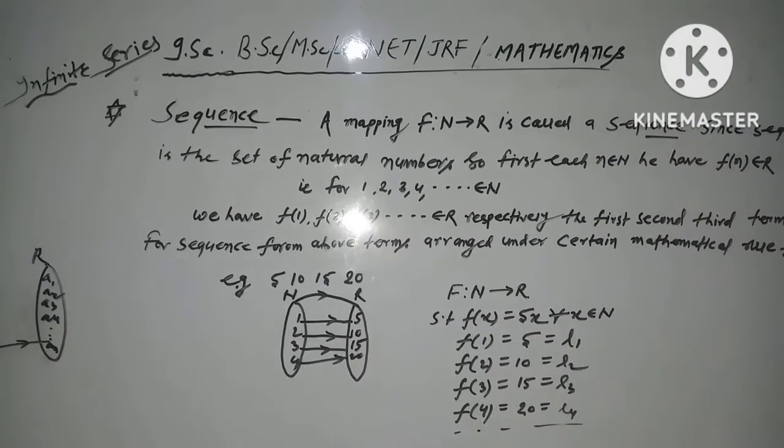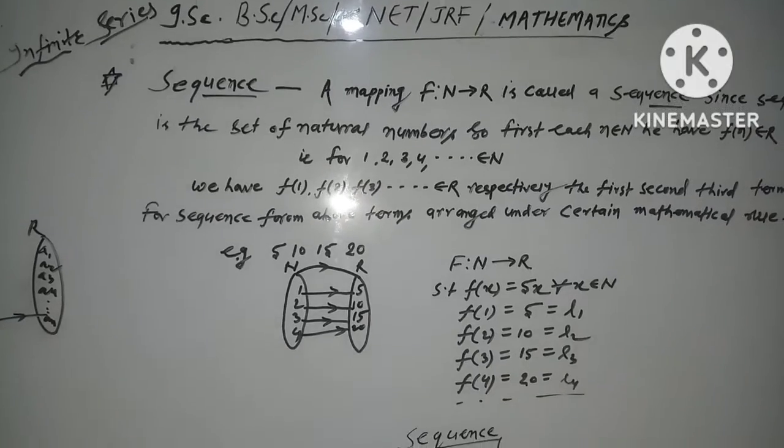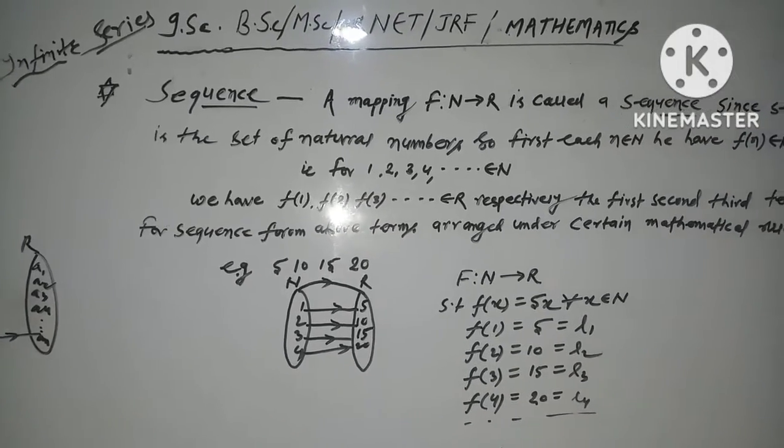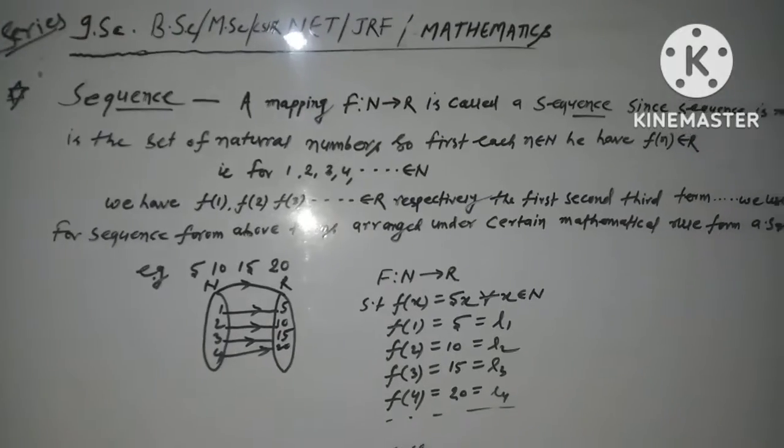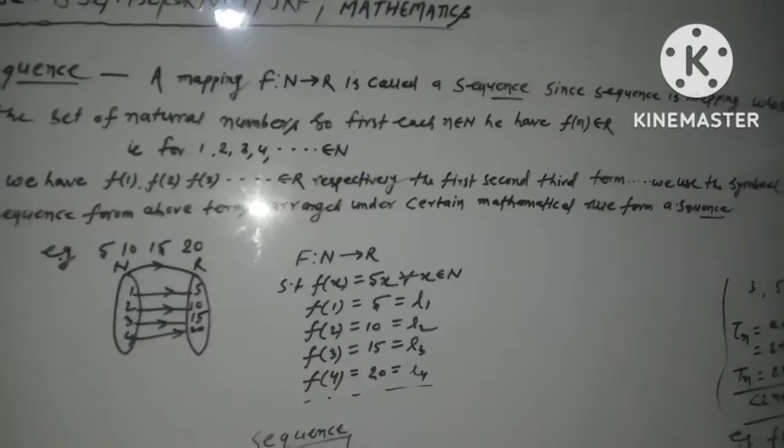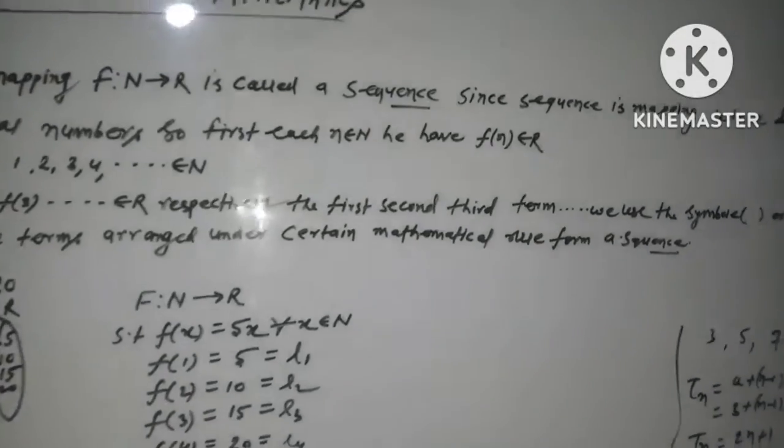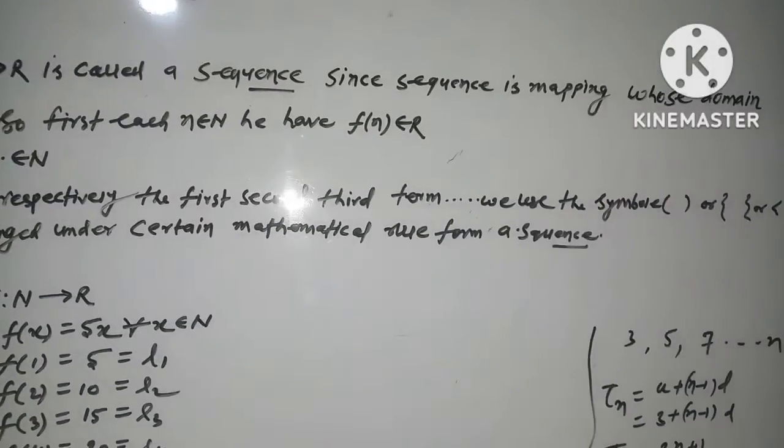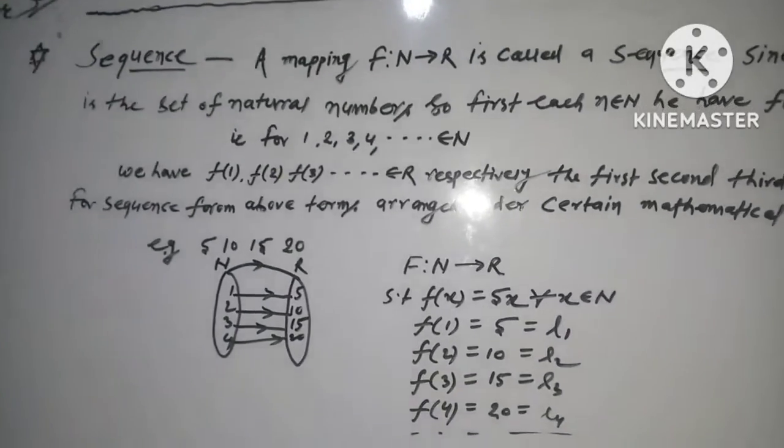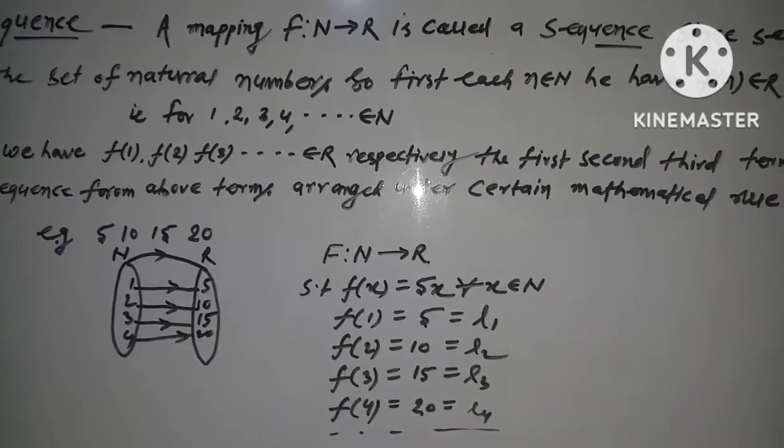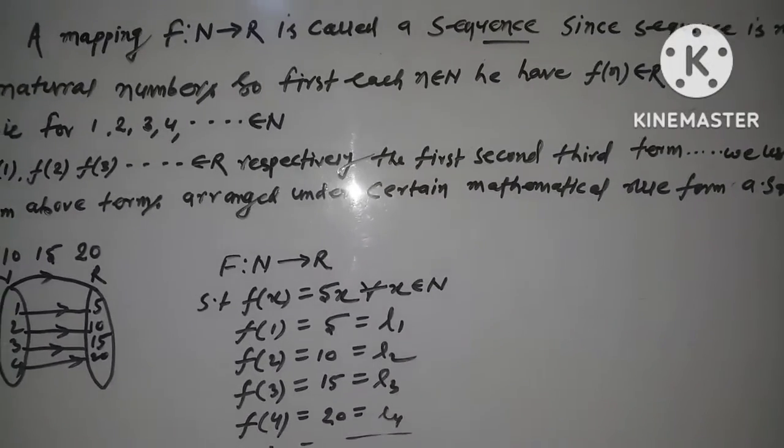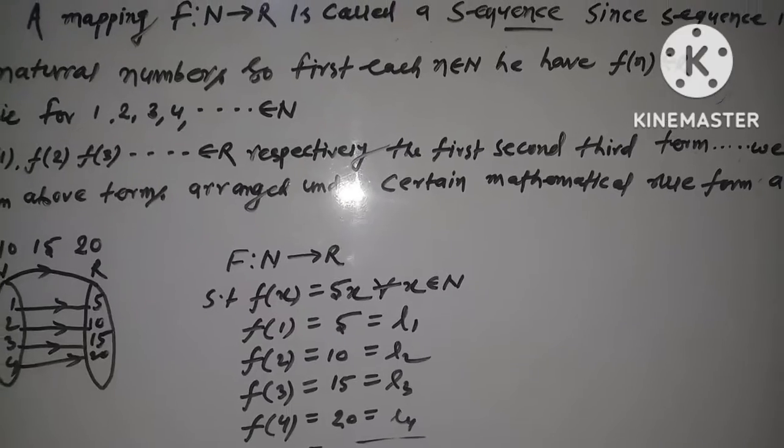Hello friends, let's look at ISC, BSC, MSC. Let's look at the sequence. In the sequence, a mapping whose domain is the set of natural numbers, so first each n belongs to capital N, we have F, n belongs to real number.